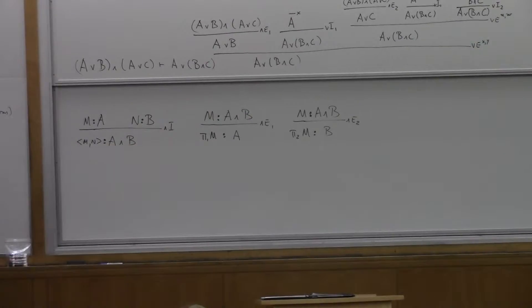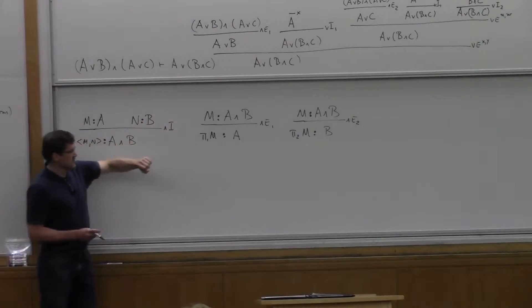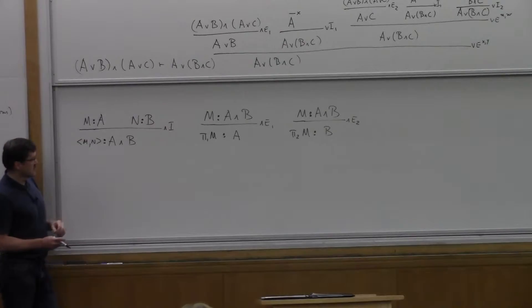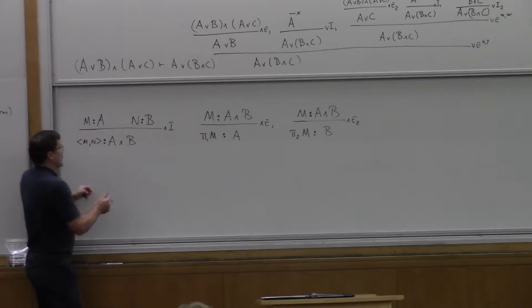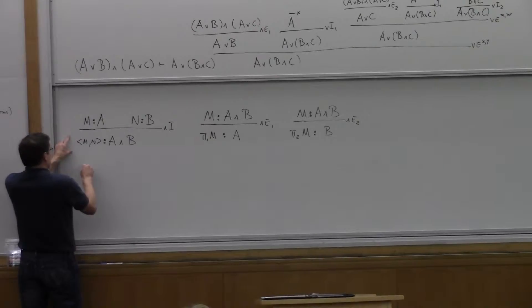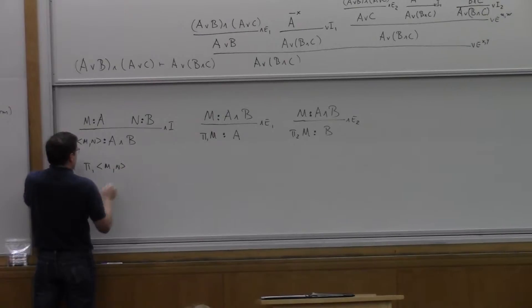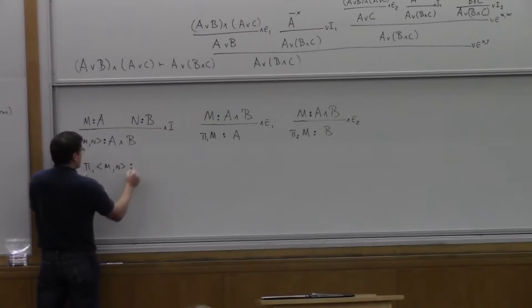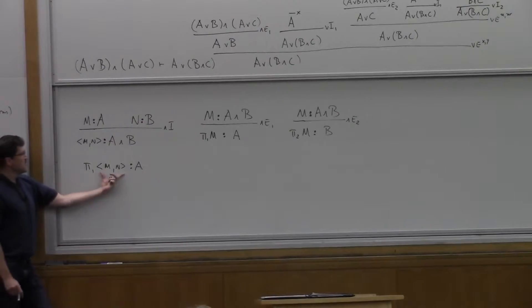Now let's think about the local reductions, or what they correspond to. To check the soundness, we check that every introduction followed by every elimination can be reduced. So this is an introduction followed by this elimination, and the proof term would be pi1 of the pair MN. That would be a proof of A. If M is a proof of A and N is a proof of B, the pair is a proof of A and B; taking the first projection gives us a proof of A.